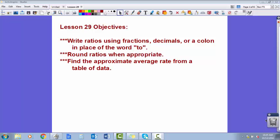We're going to write ratios using fractions, decimals, or a colon in place of the word 'to'. We're going to round ratios when appropriate and talk about some cases where it makes sense to round. Then in class, we're going to find the approximate average rate from a table of data. And again, rates are ratios.